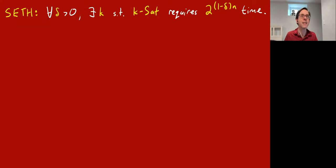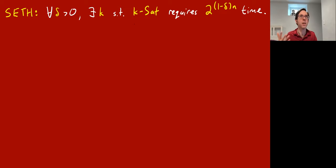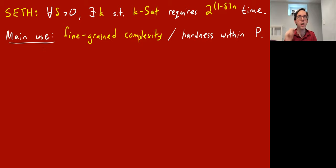A slightly variant statement is basically morally the same as SETH: the CNF-SAT problem — where there's no a priori upper bound on clause widths, you're just given a CNF and asked if it's satisfiable — SETH is basically equivalent to saying that problem requires time 2^n times poly in the number of clauses. Its main use is the topic of fine-grained complexity, also sometimes called hardness within P — a new field of algorithms and complexity developed over the last 5–10 years, particularly by CMU graduates Virginia Vassilevska Williams and Ryan Williams, among others.